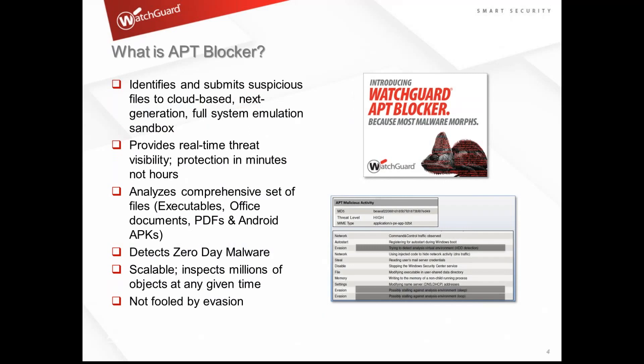So what is APT Blocker? From Lastline out of California, it identifies and submits suspicious files to a cloud-based next-gen full-system emulation environment. It provides real-time threat visibility and protection in minutes, not hours. It analyzes a comprehensive set of files: executables, Office documents, PDFs, and Android APKs.